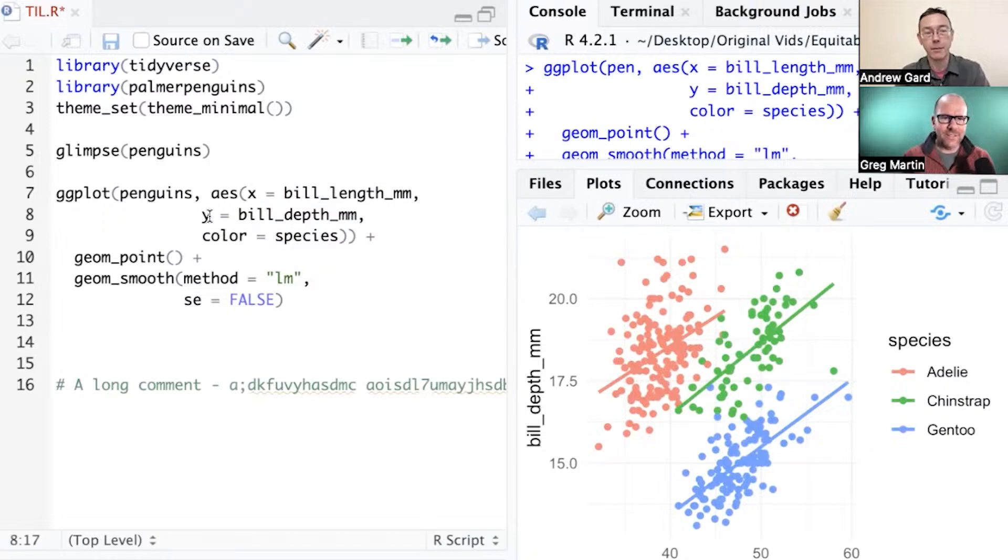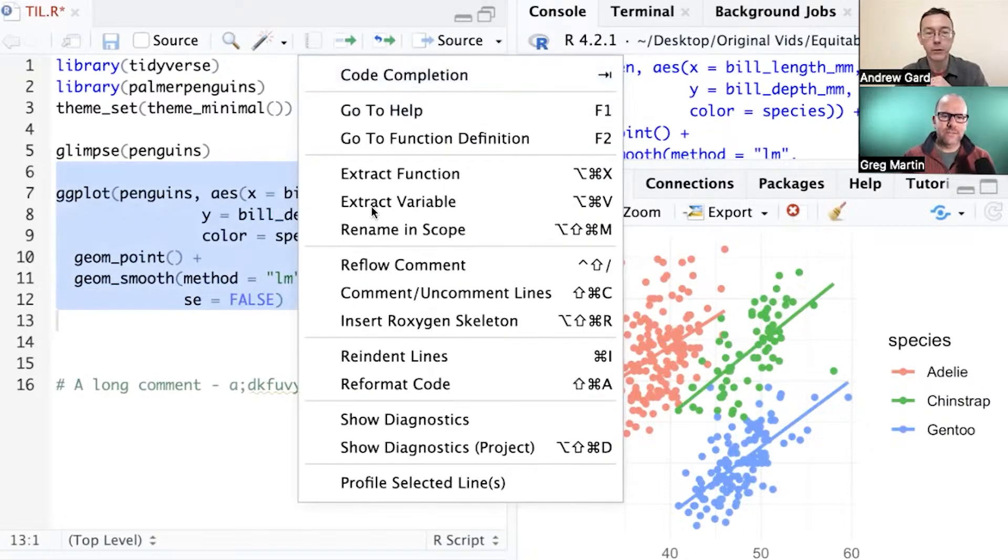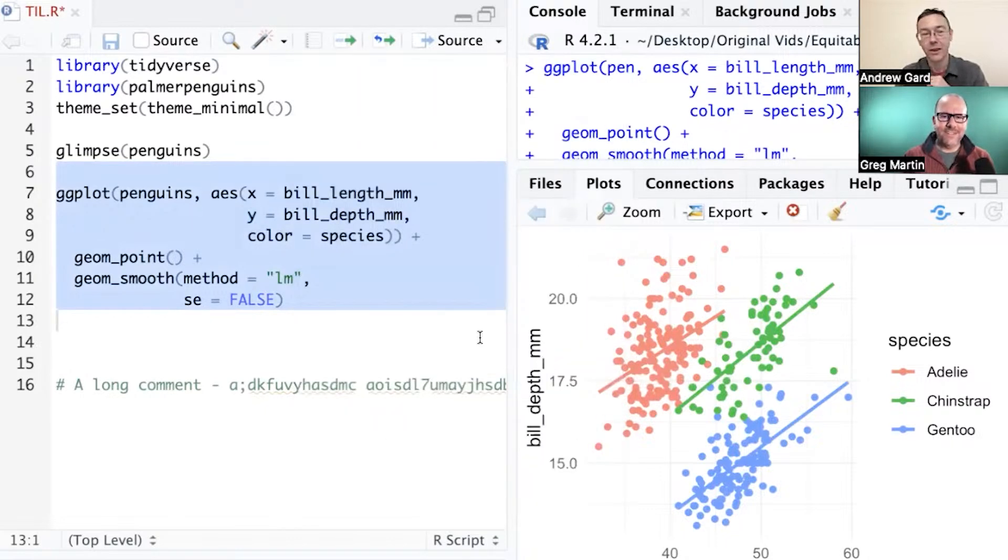And so for the longest time, I was just going in here and tabbing through by hand and putting in spaces. But you can also use this magic wand here and go to re-indent lines. And you'll see there's also a keyboard shortcut, Command I on my Mac or Control I if you're on a PC. And that'll just take care of that for you automatically. Absolutely beautiful. Very nice time saver. I am going to use that all the time. Very cool. Yeah, I'm so happy I learned that recently.